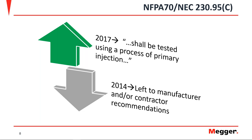That was changed in 2017. The latest version 2017 of the NEC changed clause C of that article, and now it requires us to test this Ground Fault Protection element with the primary injection method. This is a really big change — it's now a requirement to test, and it gives very clear instructions on which method to use: primary injection.